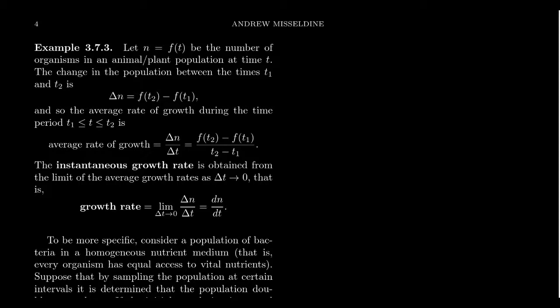So imagine we have N to be the population of some culture, organisms, plant, animal, fungi, whatever. Where is the population with respect to time, so N equals F of T is a population with respect to time. So over time, the population changes, maybe goes up or goes down based upon various factors.